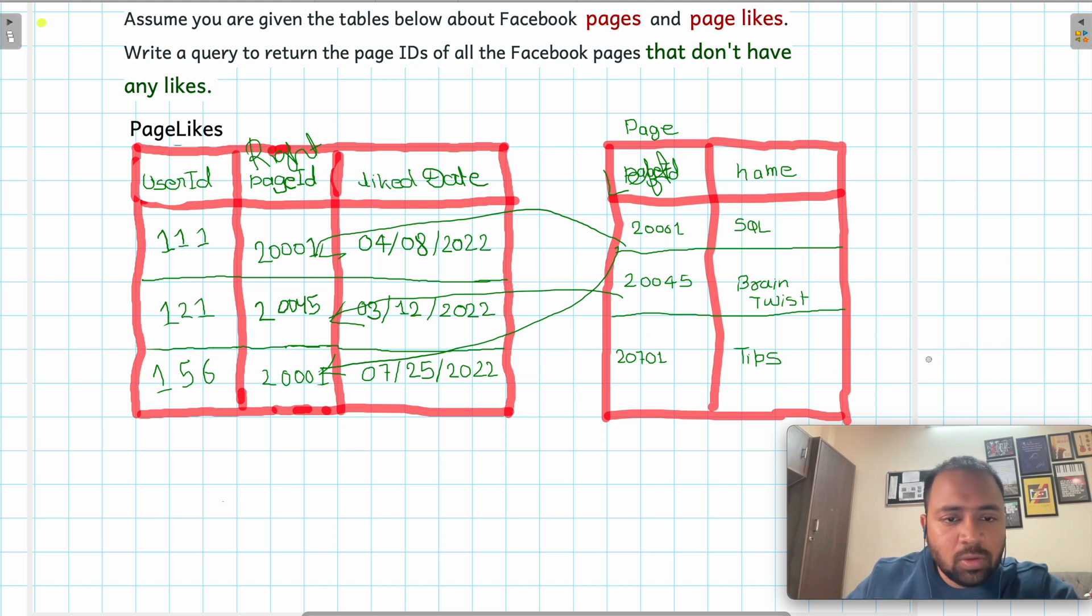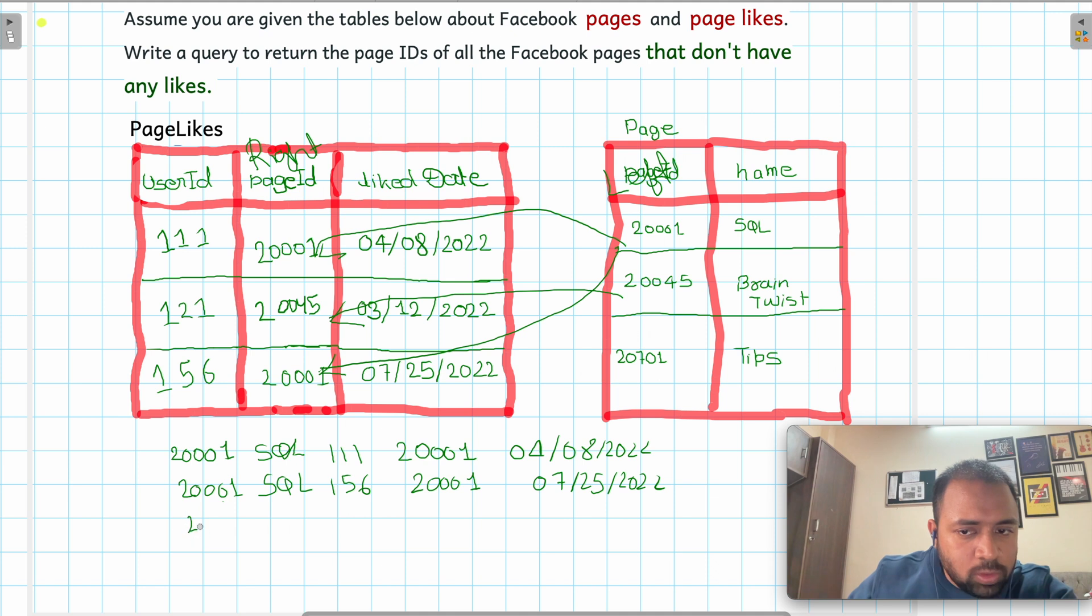So let me just try to write the result after applying the left join. Okay, so we will have 20001, SQL, 111, 20001, 04/08/2022. Then 20001, SQL, 156, 20001, 07/25/2022. Now 20045, Brain Twist will match with 121 in the right table: 20045, 03/...